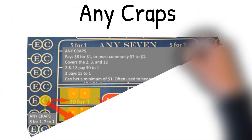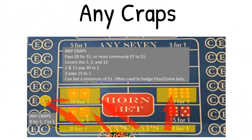Any craps covers the two, three, and twelve. You can bet the two, three, or twelve individually for one dollar, or you can play the any craps bet for one dollar. Any craps pays eight for one, or seven to one. The three pays fifteen to one. The two and twelve pay thirty to one. You get a combination of all three for one dollar — pays seven dollars if you hit any one of the three.